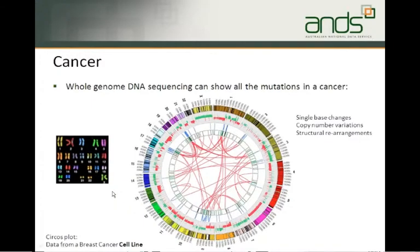Whole genome DNA sequencing has basically become cost-effective — it's now possible to sequence the entire DNA content of a single cell or a group of cells, such as those in a cancer. What this here is showing is quite a nice visualisation of effectively all the mutations in a type of cancer. It's actually data from a breast cancer cell line, so it's not from a tumour but from a cell line that behaves like a tumour.